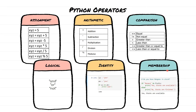Moving on to the membership operator. We have already used this with lists and tuples whenever we wanted to see whether a member exists in a list or not. For example, checking whether banana exists in a fruits list: if banana in fruits — here 'in' is the membership operator. You can also use 'not in' to check whether banana is not in fruits. That is how you use the membership operator.